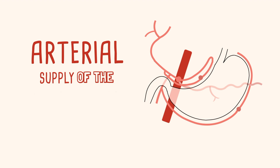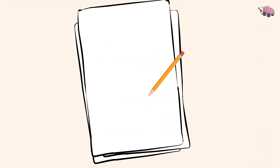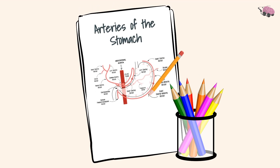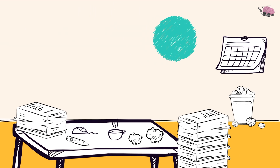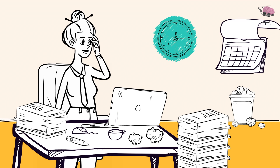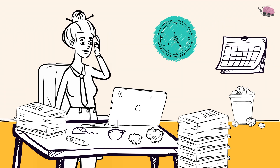Let's take a look at the arterial supply of the stomach. First grab some paper, a pencil, and some colored pencils. Now draw with us. Drawing gives you a clarification of what you're studying, and we make it so simple here that you have no excuse.